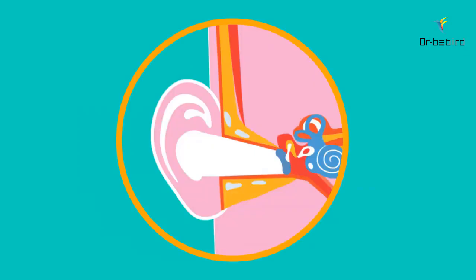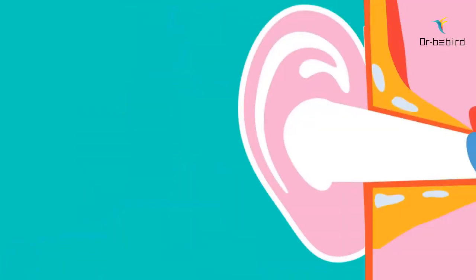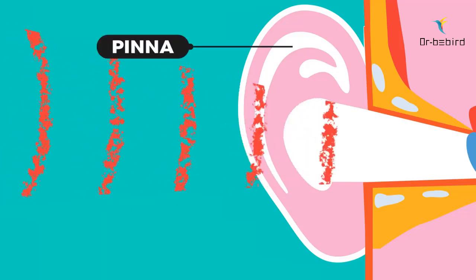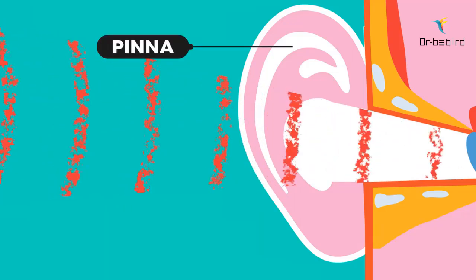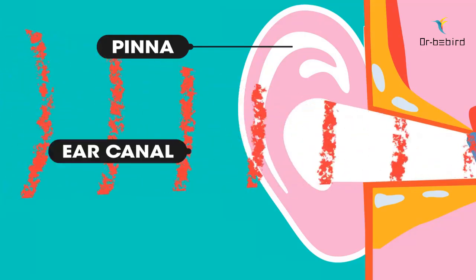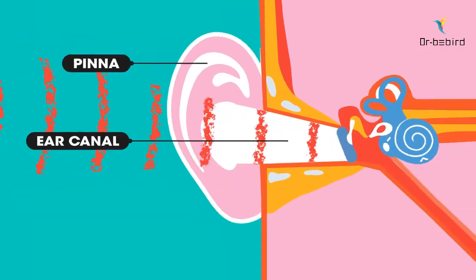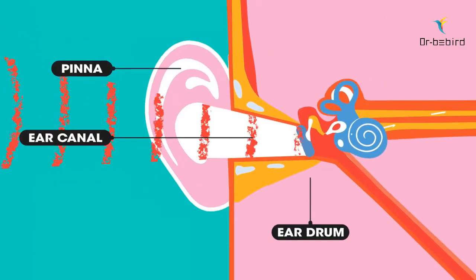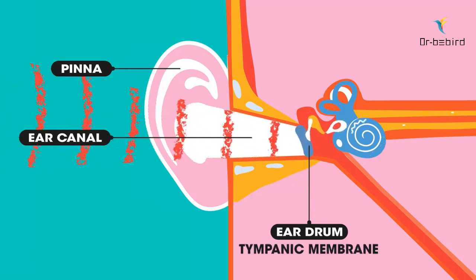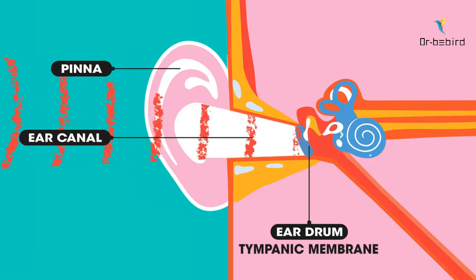In this video we will look at how the ear works. The visible part of the ear is called the pinna. It funnels sound into our ears. The sound waves travel down the ear canal towards the eardrum. The eardrum is a membrane at the end of the ear canal and is extremely sensitive.